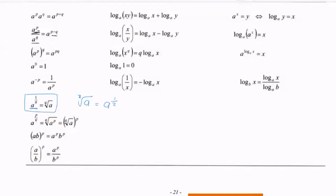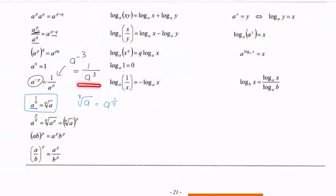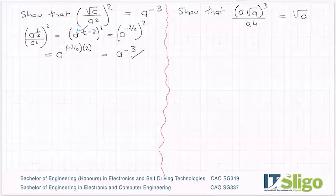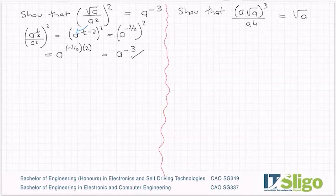Just be careful because the question could also have used this rule: a to the power of minus three. When there's a minus in the power, that is the same as one over a to the positive three. As you swing up and down — above and below the line — the sign of the power changes. So a to the minus three can also be written as one over a to the plus three. This question didn't ask for that; it says leave it as a to the minus three.